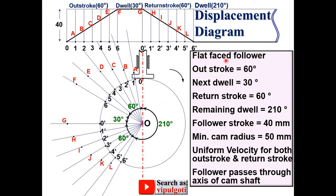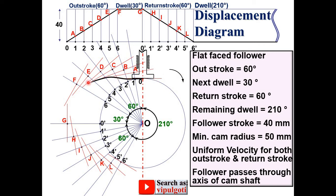Since a flat face follower is given, draw perpendicular lines to the corresponding radial (blue) lines, passing through points A, B, C, D, E, F and similarly through G, H, I, J, K, L, and also from 6'. The length of each red perpendicular line is 1 cm on both sides of the blue radial line. Now draw a smooth curve such that all these red lines are tangent to it. From 6' back to 0, draw an arc with the compass. This is the cam profile.